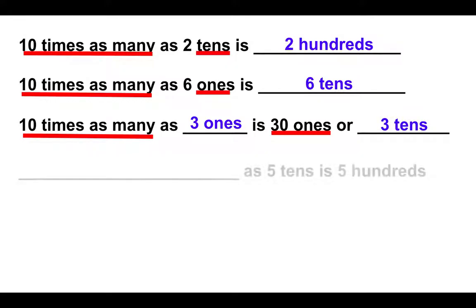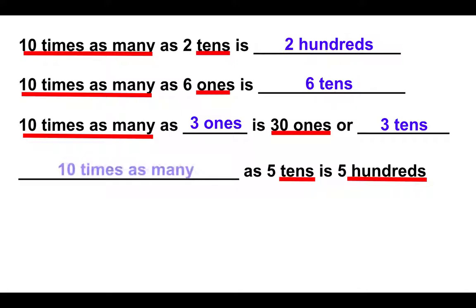And one last problem. Say you're given blank as five tens is five hundreds. This one sounds a little confusing, but what it's asking you to do is compare tens with hundreds. Well, a hundred is how many times as many as a ten? Yeah, it's ten times as many. So what you can write is ten times as many as five tens is five hundreds. That's just saying ten times more than five tens is five hundreds.